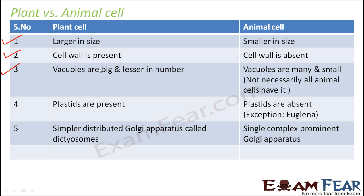In plant cells, vacuoles are big and lesser in number — you do not have many vacuoles in a plant cell, but whatever vacuoles are present are quite big in size. In animal cells, the vacuoles are small sized but many in number. In fact, it is not necessary that all animal cells will have a vacuole, so vacuoles are optional for animal cells.